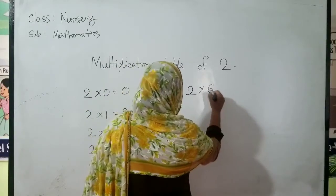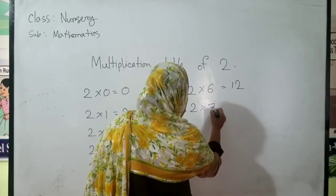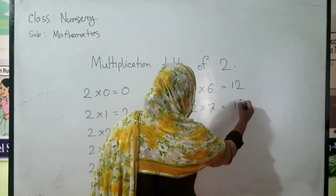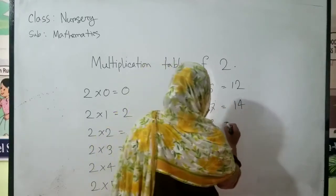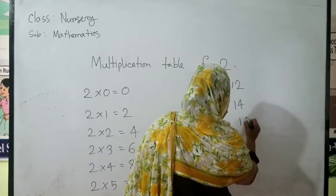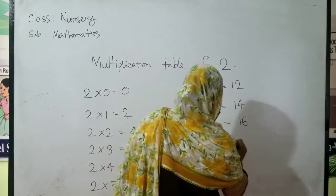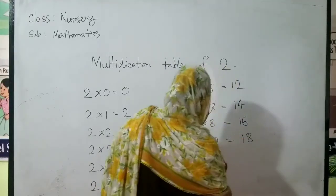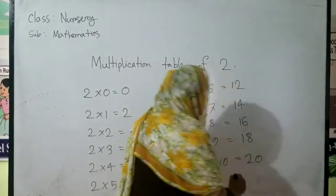Two sixes are twelve. Two sevens are fourteen. Two eights are sixteen. Two nines are eighteen. And two tens are twenty.